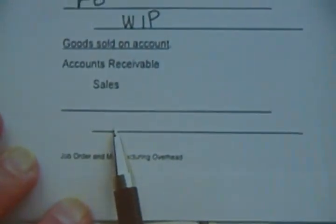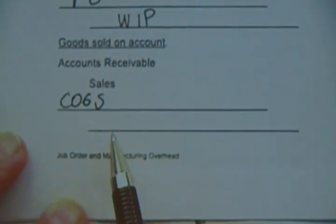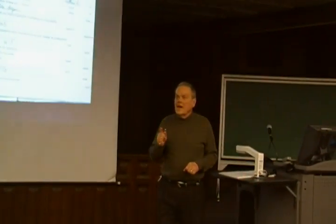This part reminds me a lot of first semester. We sell goods — debit accounts receivable, credit sales. Perpetual inventory takes two entries. The second entry is debit cost of goods sold. Up until now we would have credited merchandise inventory, but now the name of that account is finished goods. Debit cost of goods sold, credit finished goods. When you do your homework, it's going to be a lot like that.